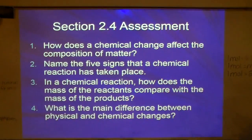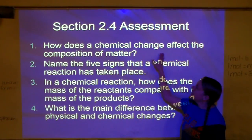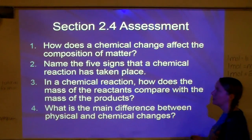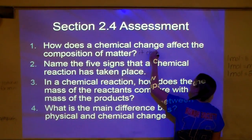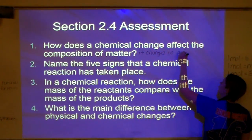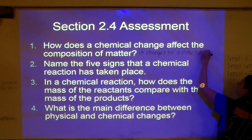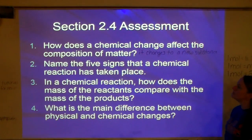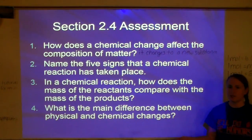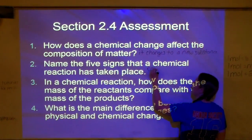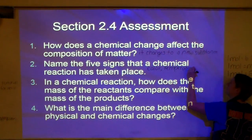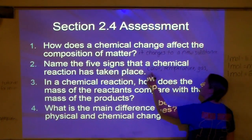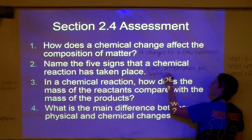Section assessment: How does a chemical change affect the composition of matter? It changes to a new substance. Name the five signs that a chemical reaction is taking place: change in color, change in temperature, production of a gas, production of light, and formation of a precipitate.